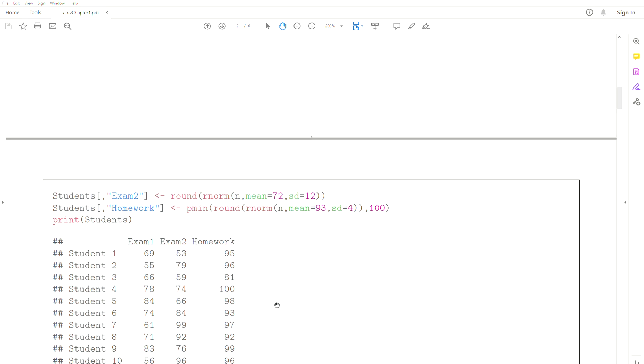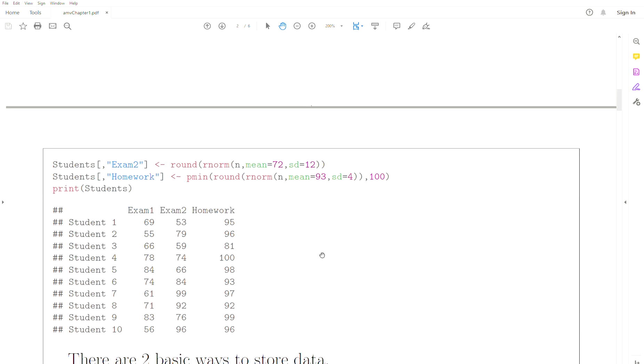So let's add exam two and homework in this object called students. And now it's clearly multivariate because we have three pieces of information per subject. And so it's multivariate.